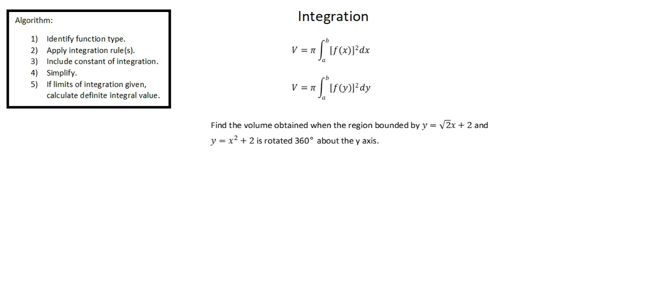Hi, this is Thomas. Welcome back. Our topic is integration. This lesson is volume, example two. Our requirement reads: find the volume obtained when the region bounded by y equals square root of 2x plus 2 and y equals x squared plus 2 is rotated 360 degrees about the y-axis.